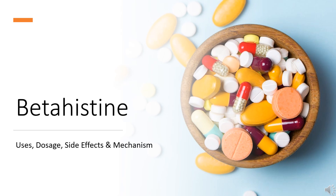Beta-histine is an anti-vertigo agent used for the reduction of episodes of vertigo associated with Meniere's disease.